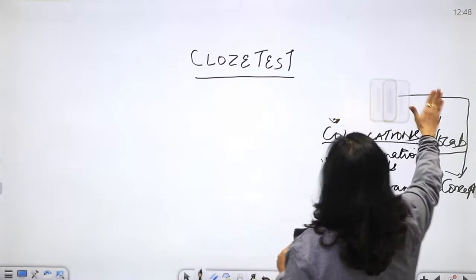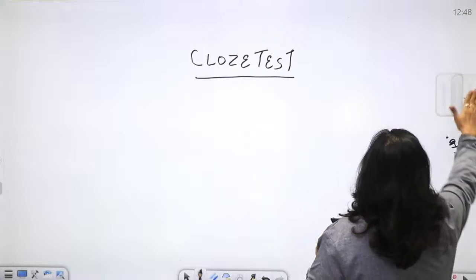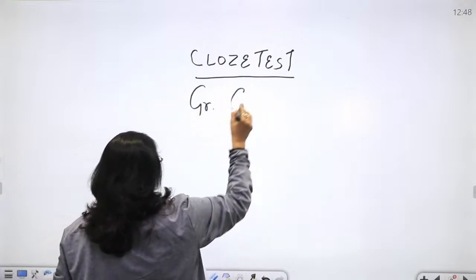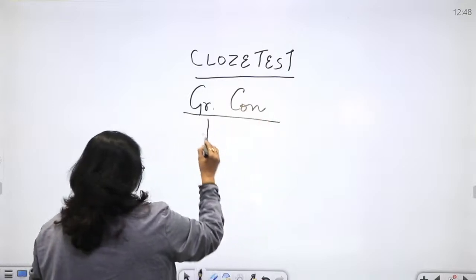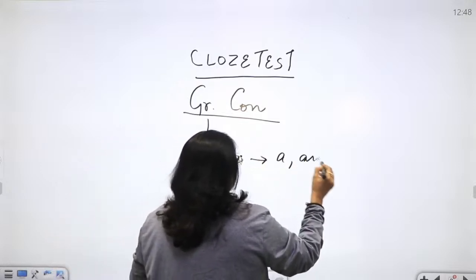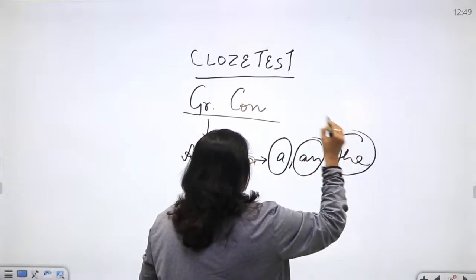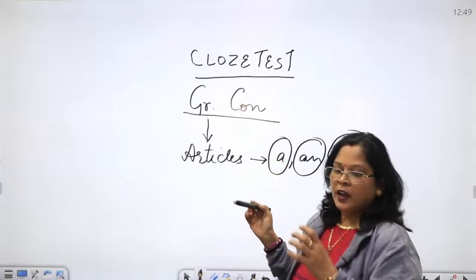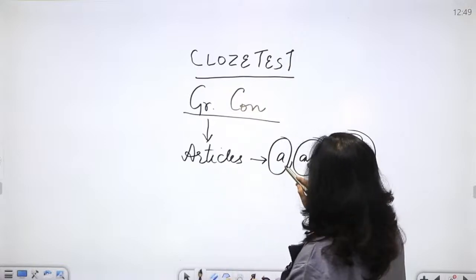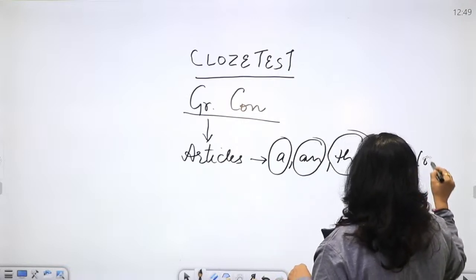This is just a revision of the cloze test solved before. If you've forgotten something, we will cover it here. These are our grammar concepts. The first thing is articles: A, An, The. You know - A and An are for consonants and vowels, and The is for specific use or where we emphasize.